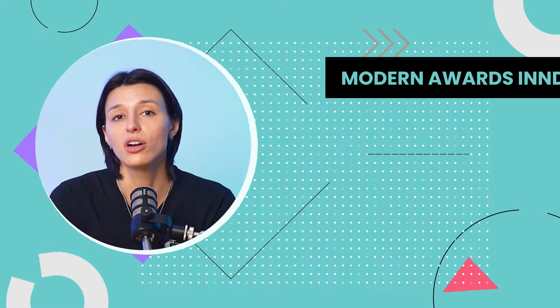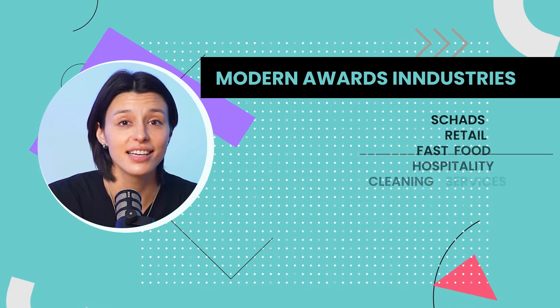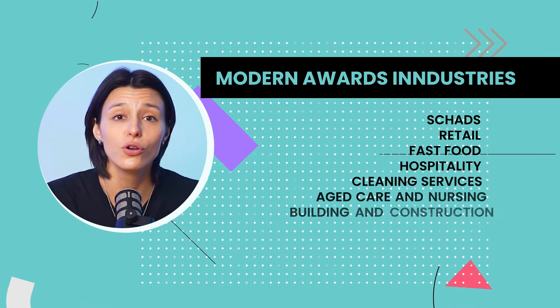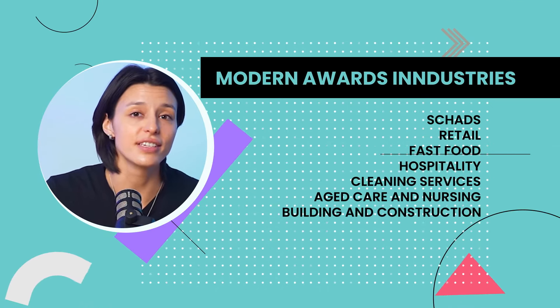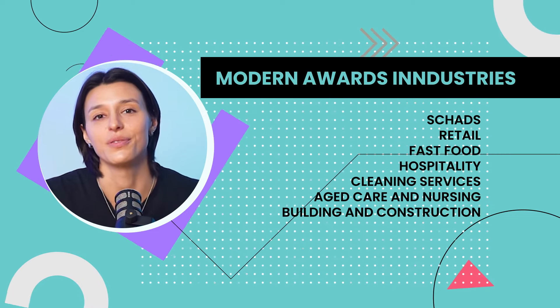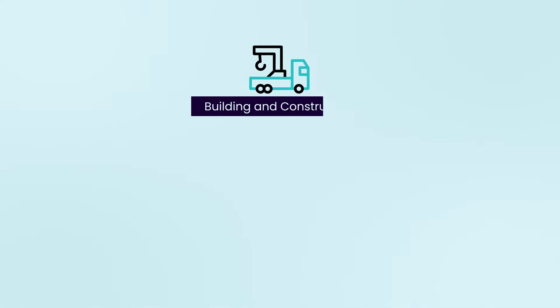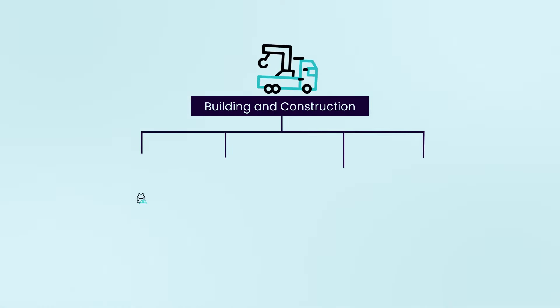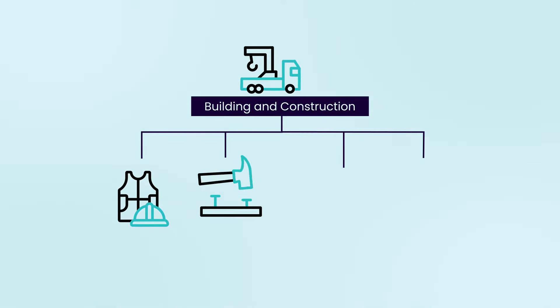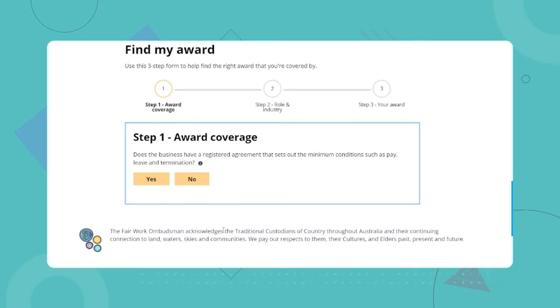So how do you figure out which modern award applies to your employees? Well, it depends on the industry you're in and the specific job they do. Some of the most common modern awards cover industries like retail, fast food, hospitality, cleaning services, aged care and nursing, and building and construction. But even within these industries, there can be different awards for different occupations. For example, in the building and construction industry, you've got separate awards for general onsite work, joinery work, plumbing, and electrical work.